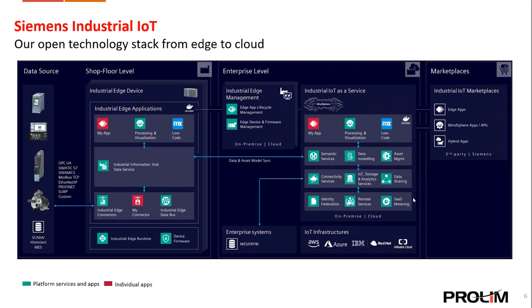At the enterprise level, Industrial Edge Management oversees Edge applications, lifecycle management, and handles Edge devices across multiple locations. Edge app lifecycle and firmware management is responsible for managing the lifecycle of apps and ensuring firmware updates. Data and asset models sync ensures that asset data and models are synchronized between the Edge and enterprise levels. Enterprise-level integrations integrate IoT data with enterprise systems including MES and ERP systems.